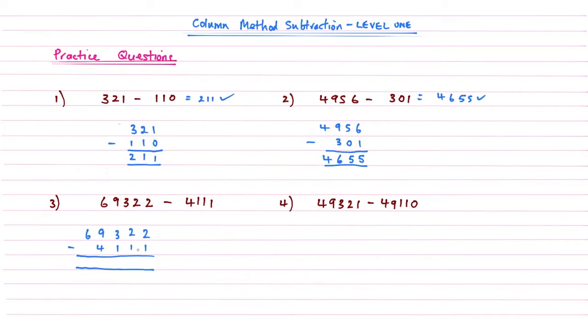Let's subtract these. 2 subtract 1 is 1, 2 subtract 1 is 1, move on to our hundreds column, 3 subtract 1 that's going to give me 2, 9 subtract 4 is 5, and then 6 subtract nothing is just 6. So the answer to question 3 is 65,211.